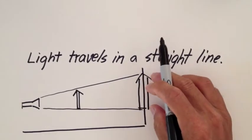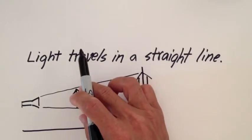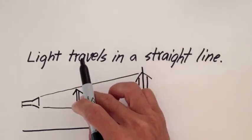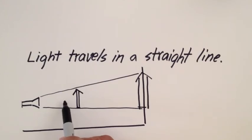The principle of the fact that light travels in a straight line is used in cameras, and a pinhole camera is an example of a basic camera.